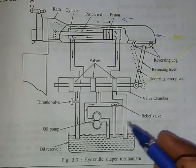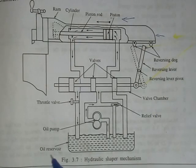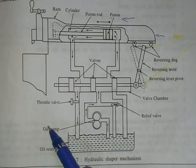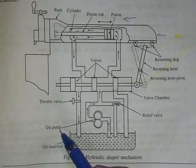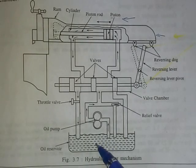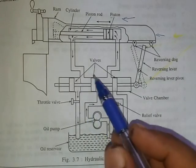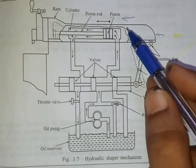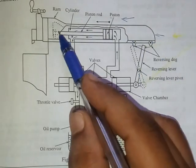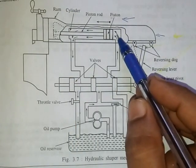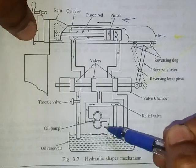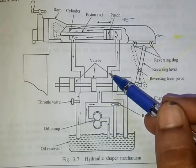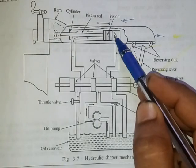Let us study the mechanism of the hydraulic shaper. The oil from the reservoir is pumped by means of an oil pump under high pressure. Due to this high pressure, the oil flows and enters at the right side of the piston, exerting high pressure on it.